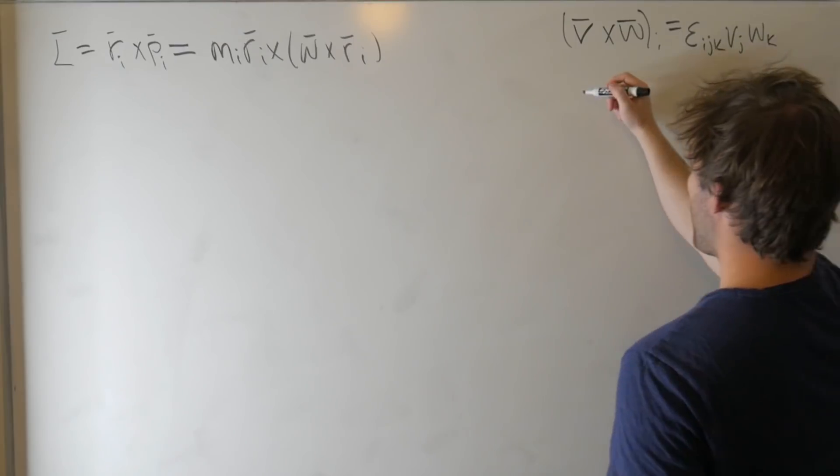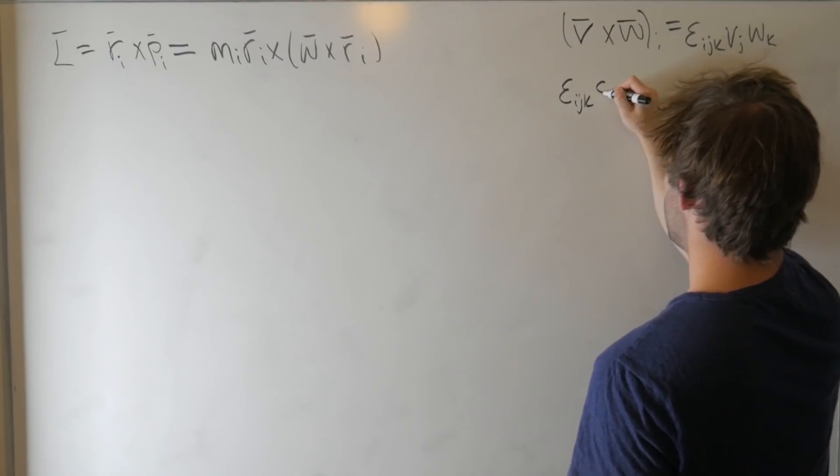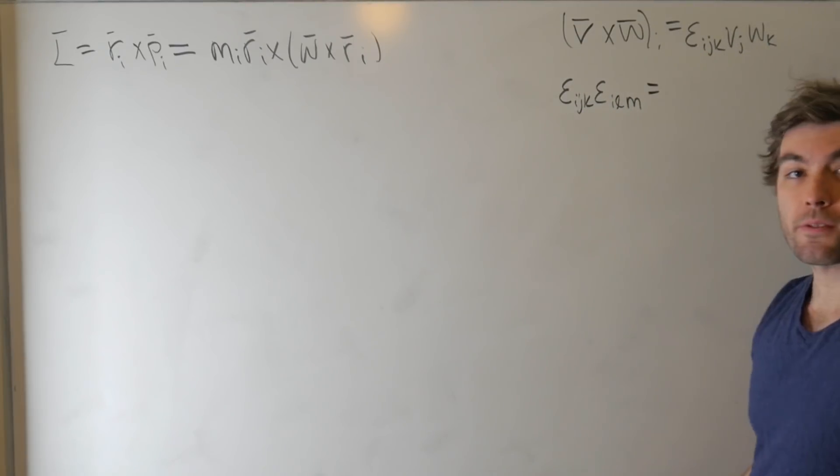And then if we have the product of two Levi-Civita symbols, so epsilon_ijk, say epsilon_ilm, we can expand this in terms of Kronecker deltas.